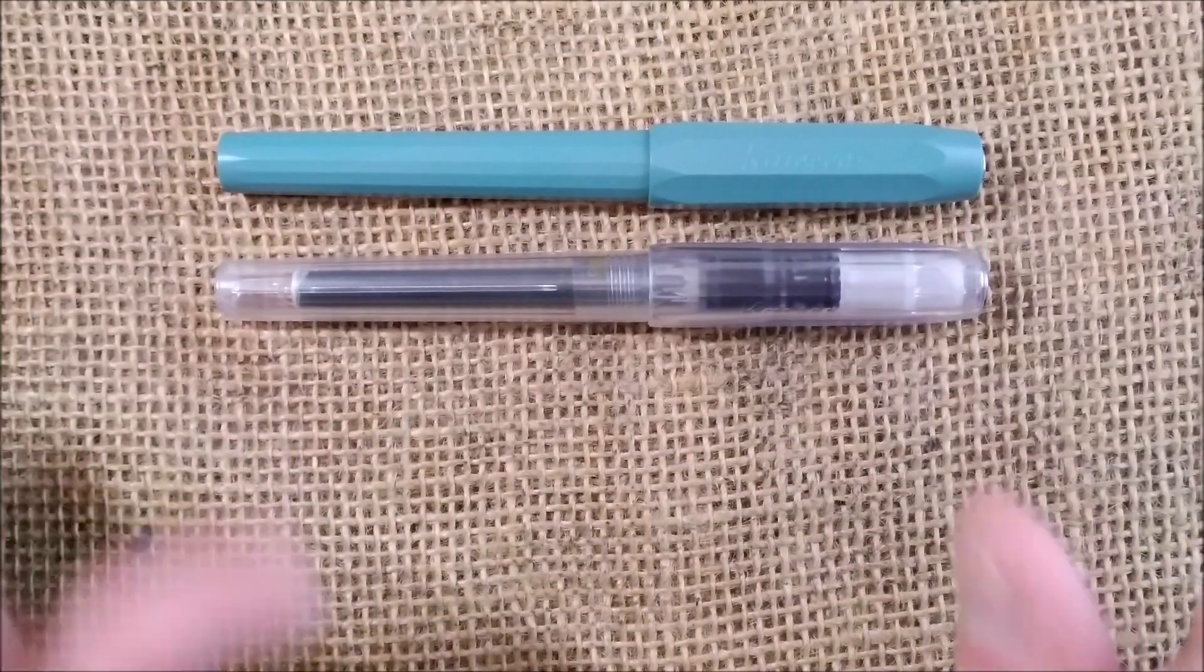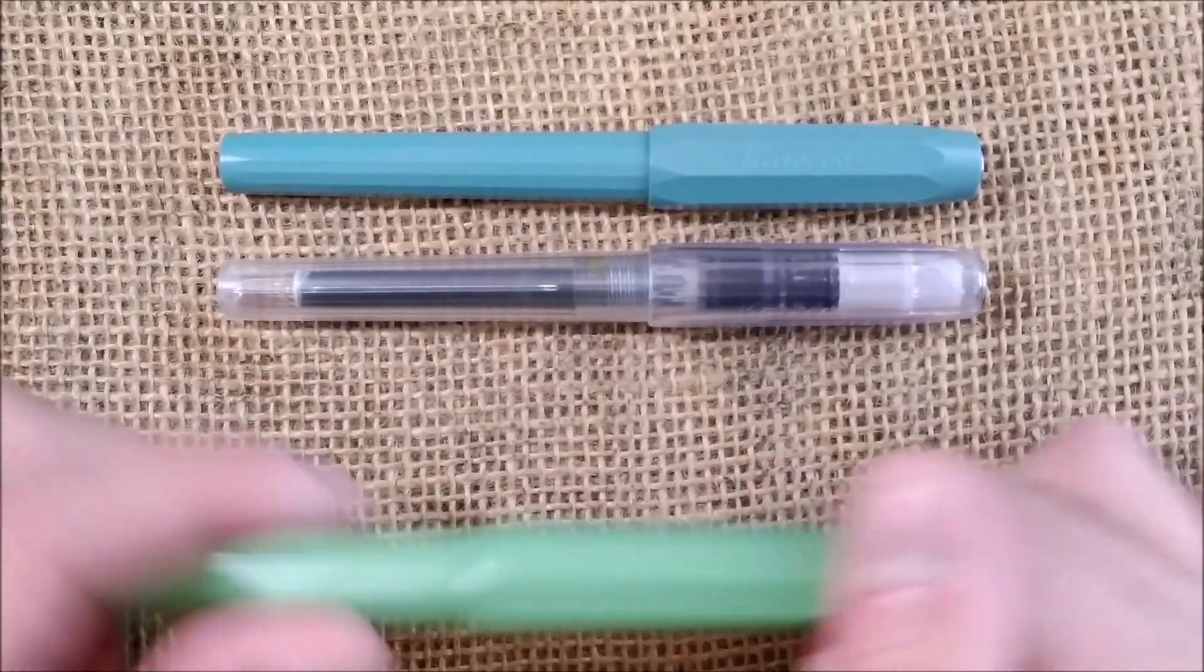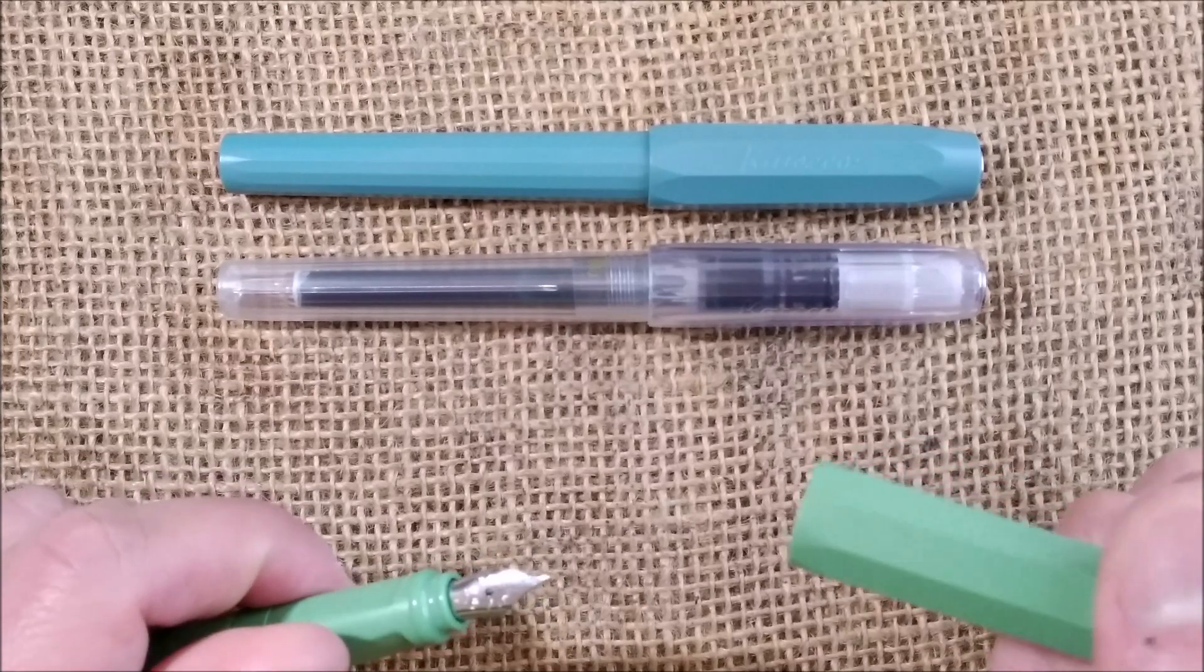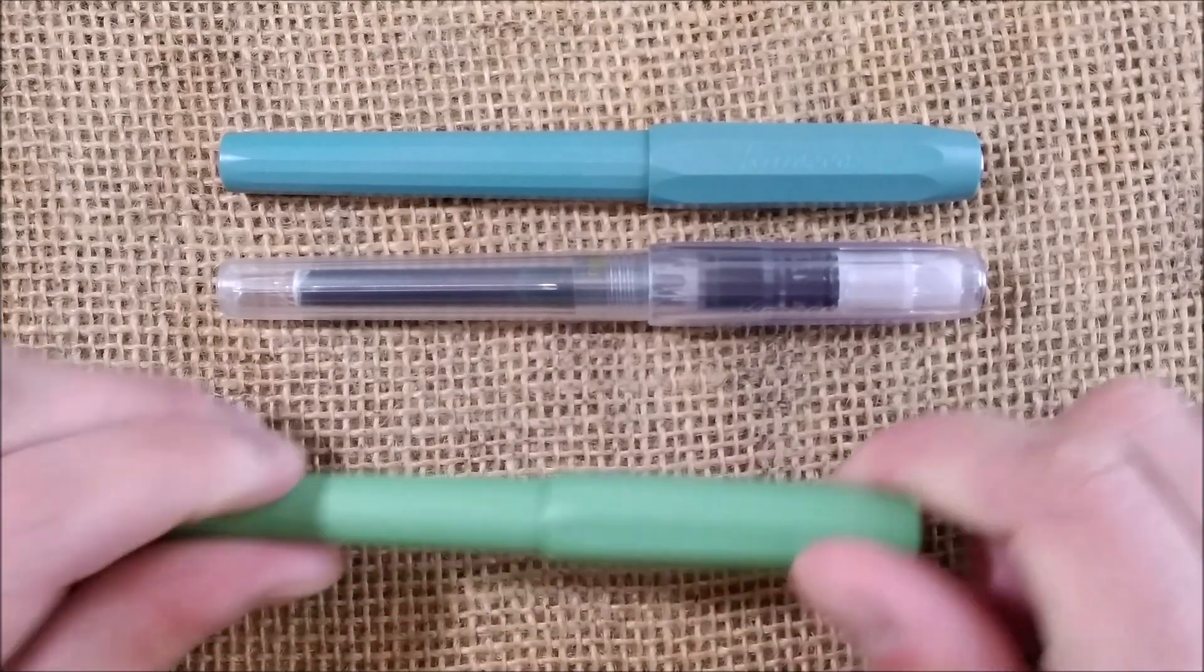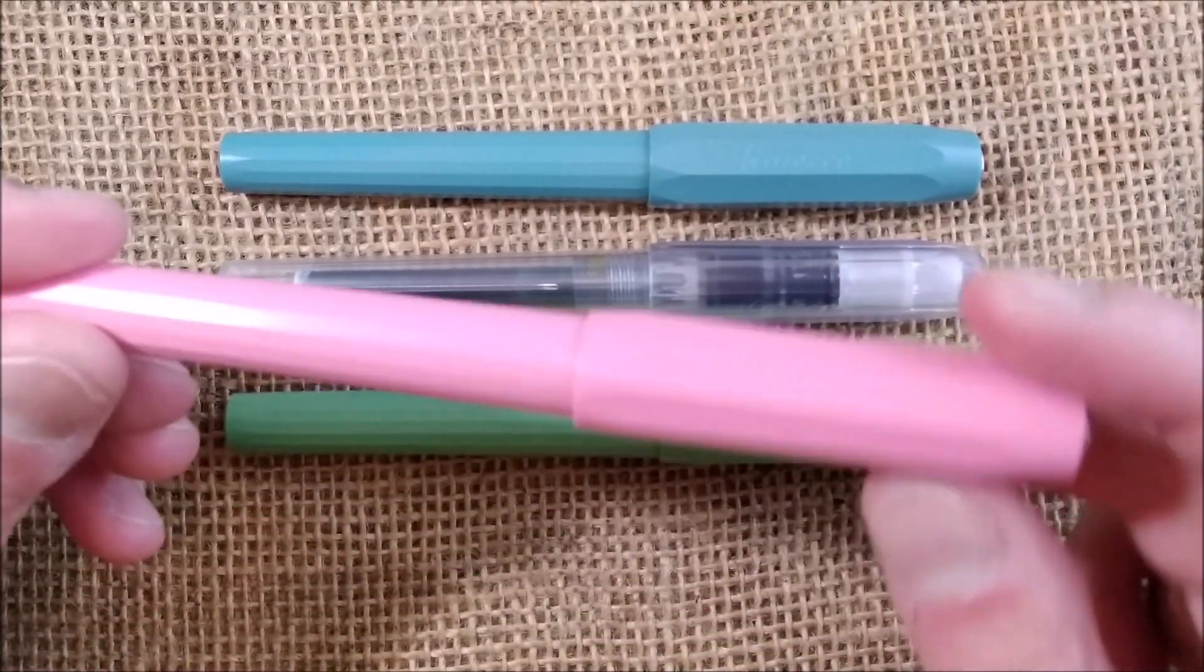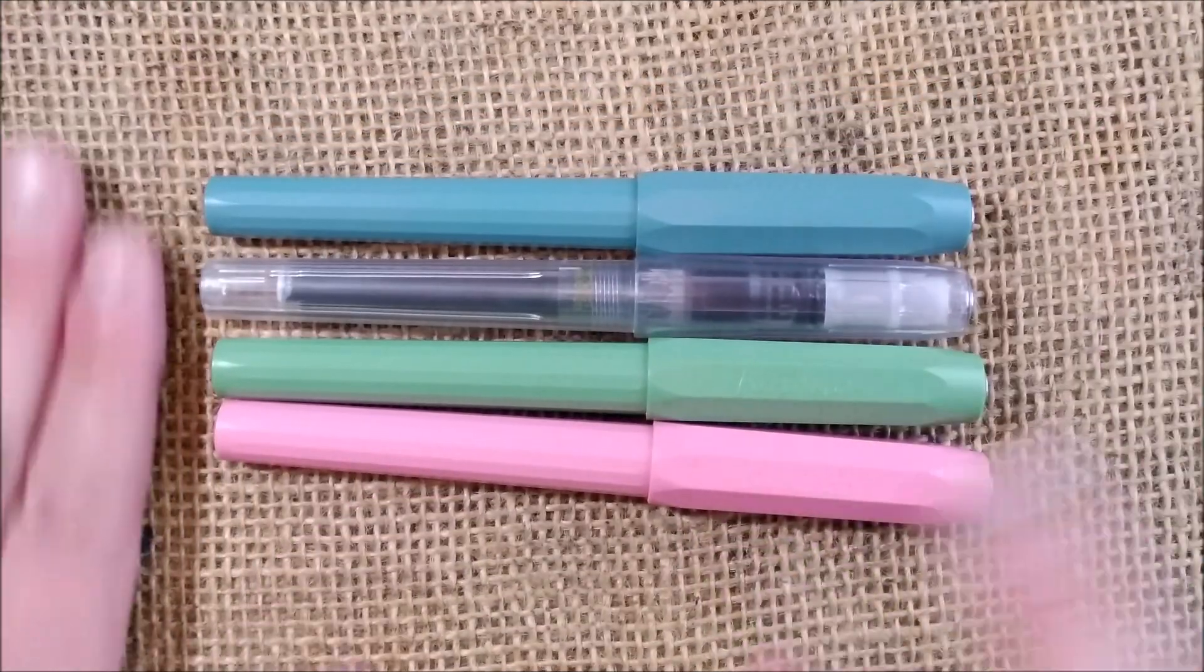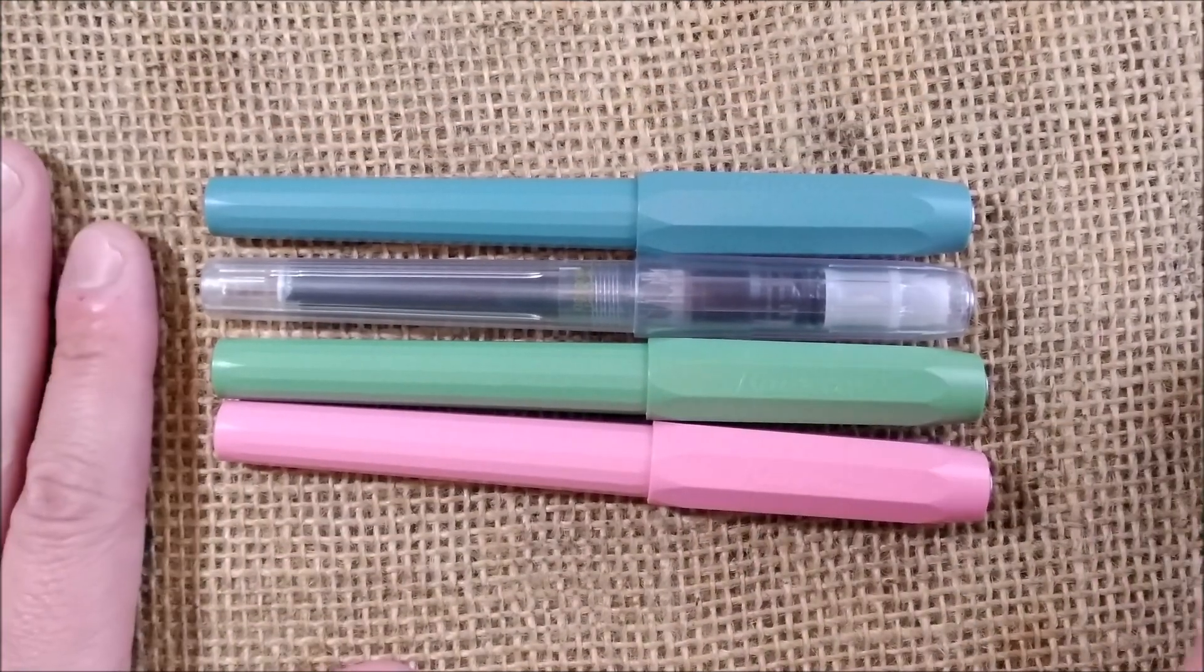But all clear again. We have the Jungle Green, which is green. Also the section, all of the same color. And the Peony Blossom, also all of the same color but pink.